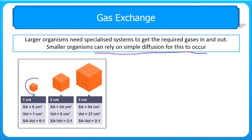This is illustrated in the image here. If we look at this small cube, with six sides, and each length of the cube is one centimetre, its surface area is six centimetres squared and the volume is one centimetre cubed, which gives an overall ratio of six to one.